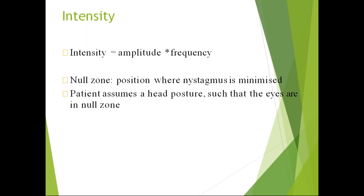Intensity equals amplitude multiplied by frequency. There is another term called the null zone — a particular position where nystagmus has minimal movement. That position is called the null zone. The patient assumes a head posture such that the eyes are in the null zone. Because of continuous eye movement, the patient can't fix on an object, so they tilt or turn the head to bring the eyes into the null zone.